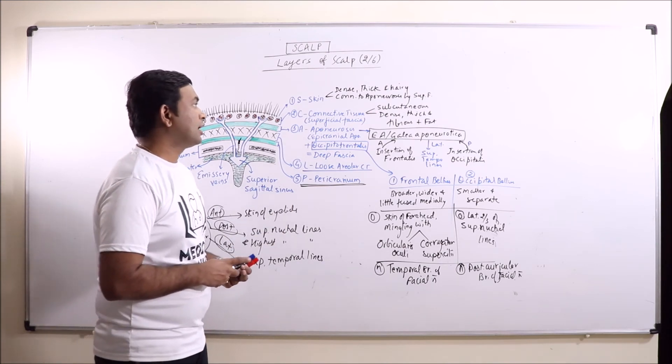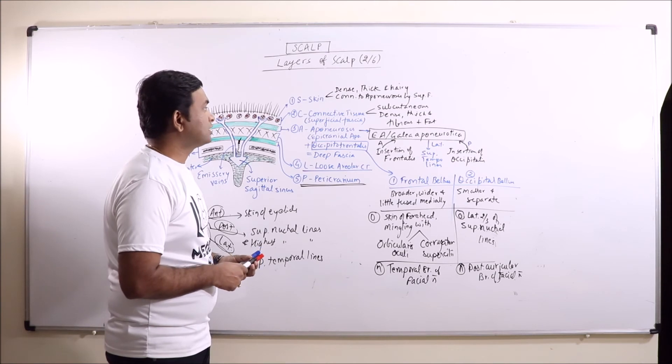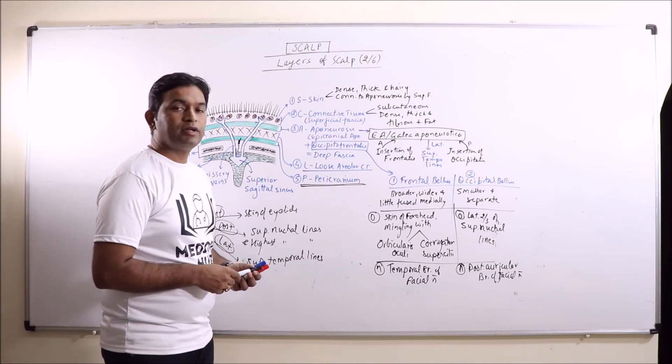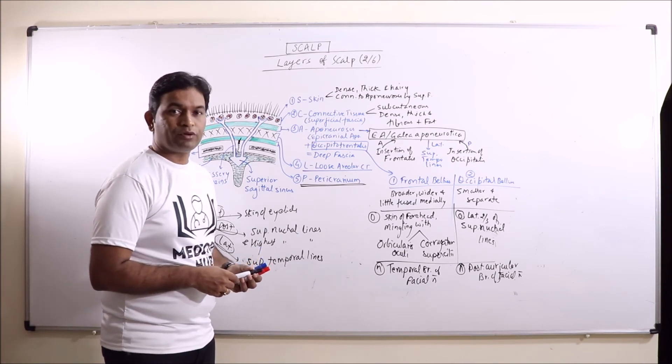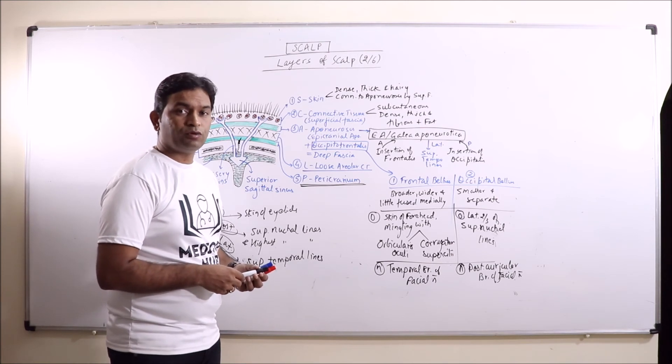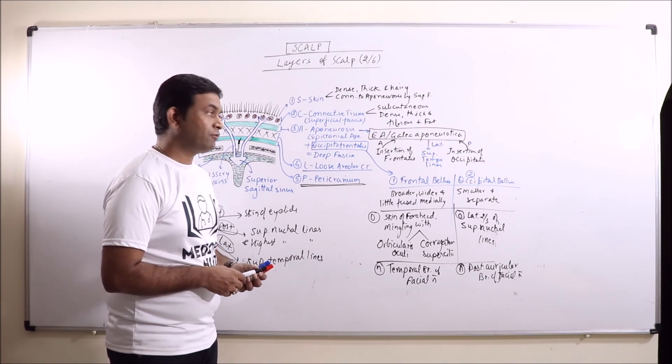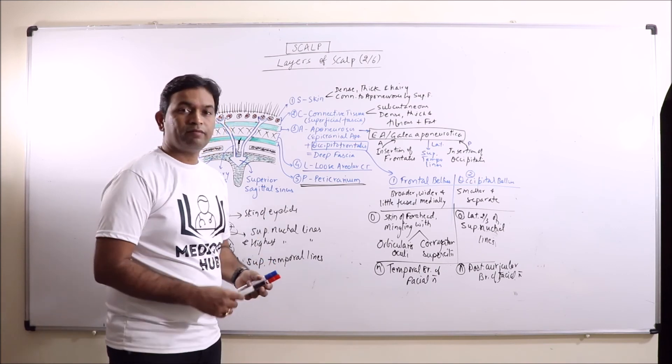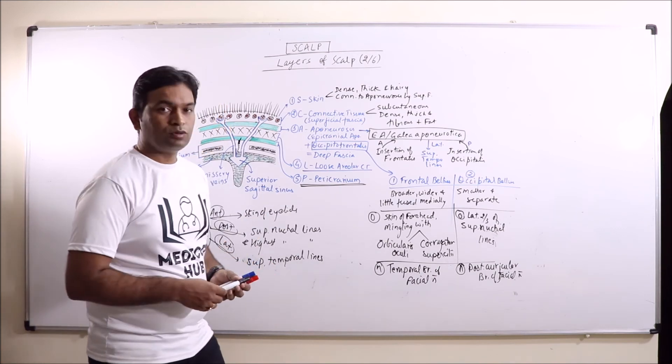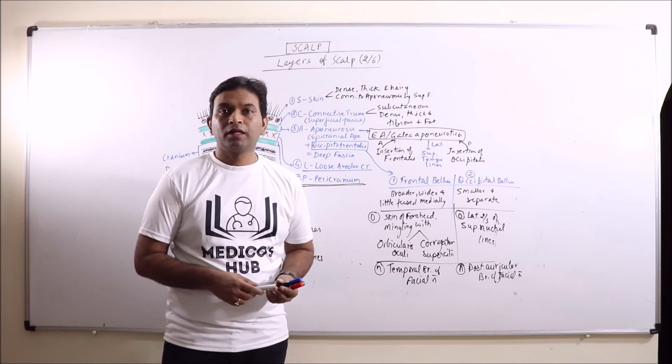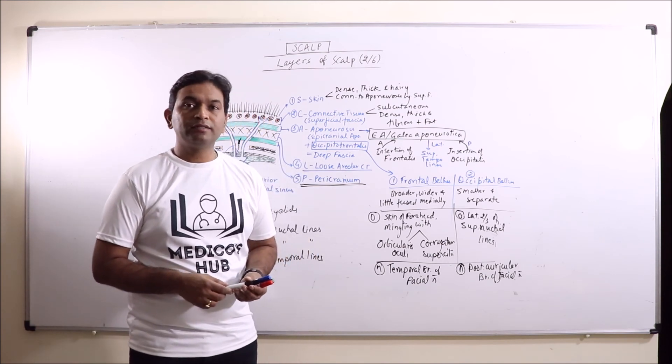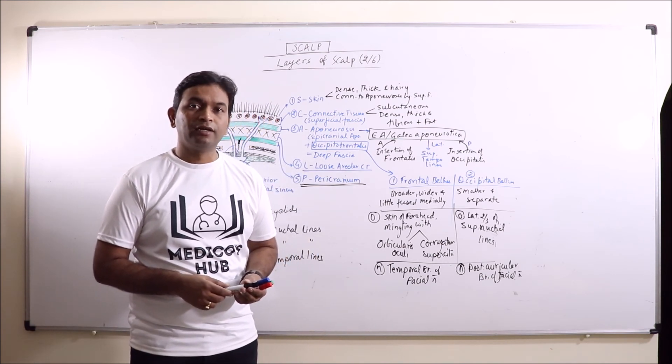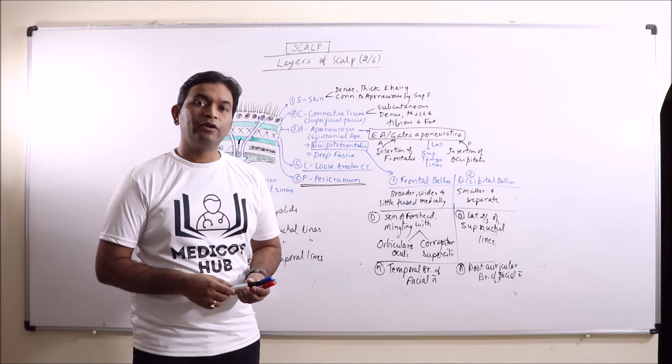First is skin. Another is connective tissue that represents the superficial fascia. Third one is aponeurosis, epicranial aponeurosis along with occipitofrontalis muscle is known as deep fascia. Then loose areolar connective tissue, followed by pericranium at the lower side. So this is the scalp. Hit the like button, share and subscribe our channel to get the latest updates and notifications.